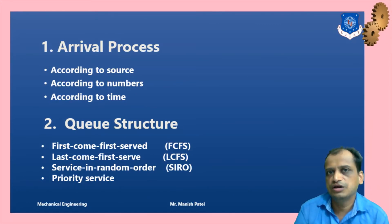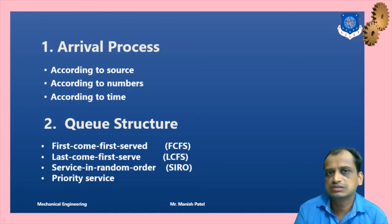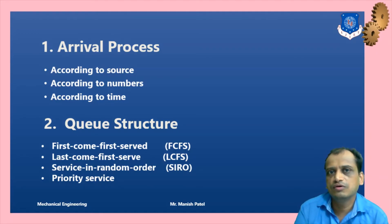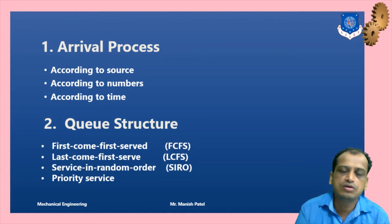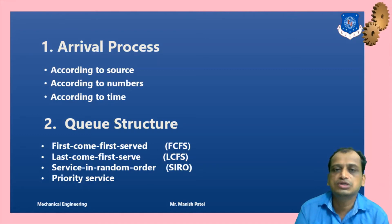The arrival process refers to where customers are coming from, how many there are, and the time intervals at which they arrive at the service facility. The queue structure refers to the discipline: first come first serve (FCFS), where the first to arrive is served first; last come first serve (LCFS), where the last to arrive is served first; SIRO — service in random order; and priority, where customers are served on a priority basis.